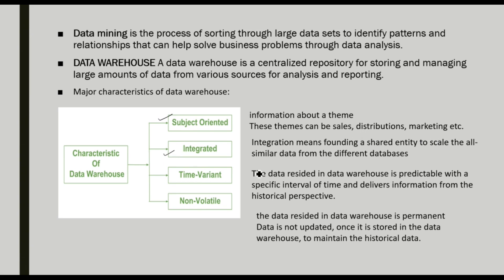The second characteristic is integrated. Integration means finding a shared entity to consolidate all similar data from different databases. We are getting different data from different sources with different formats, so we want to integrate it first. The third characteristic is time-variant. The data in the data warehouse is maintained with respect to a specific interval of time and delivers information from a historical perspective — storing sales data for January, February, March, and so on.